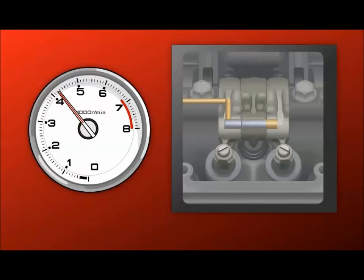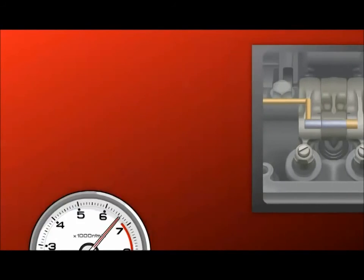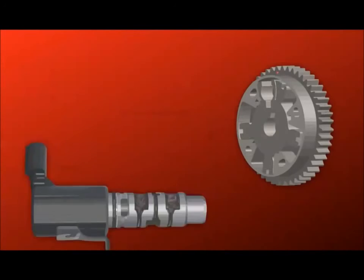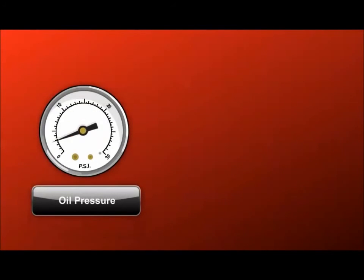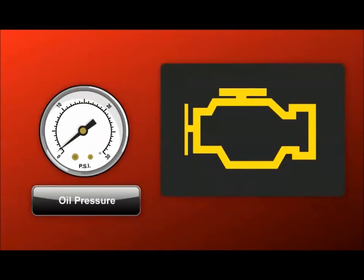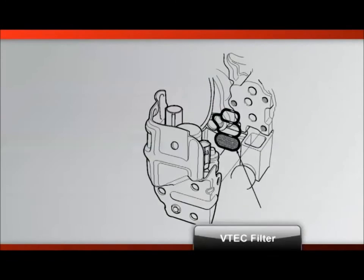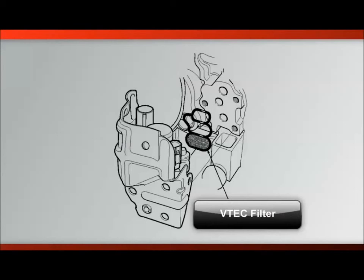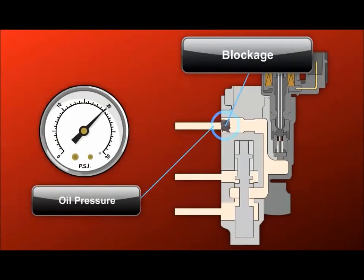Low engine oil pressure can cause VTEC engagement problems or VTC position faults. If overall oil pressure drops, these faults may cause the PCM to set a DTC. The VTC or VTEC solenoid filter screen can also illuminate the MIL. Sludge or other blockages can isolate the VTEC system even when overall system pressure is good.